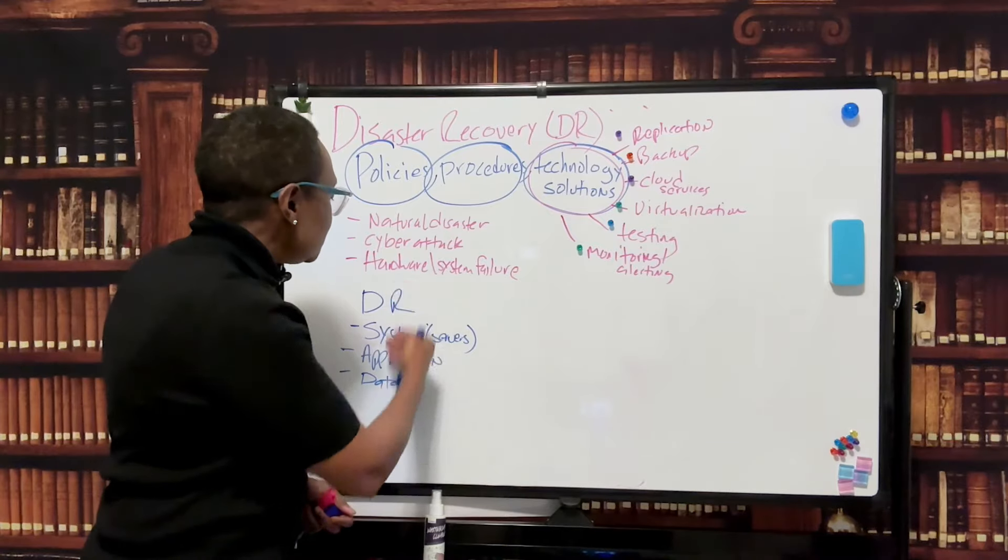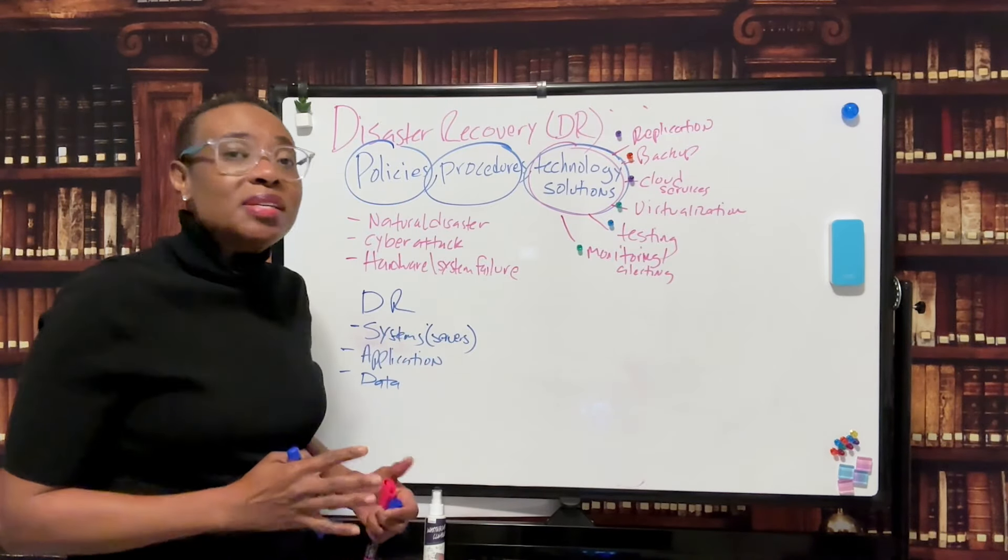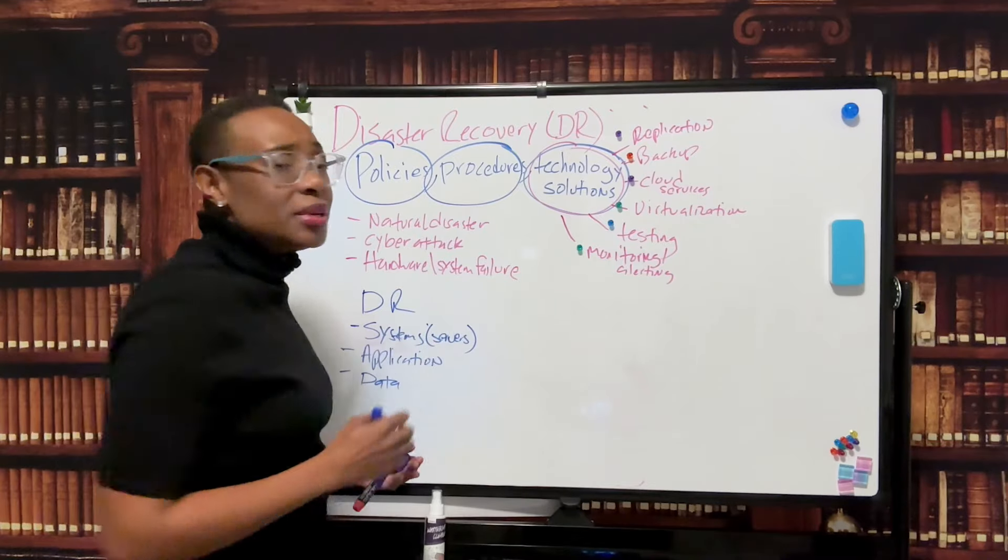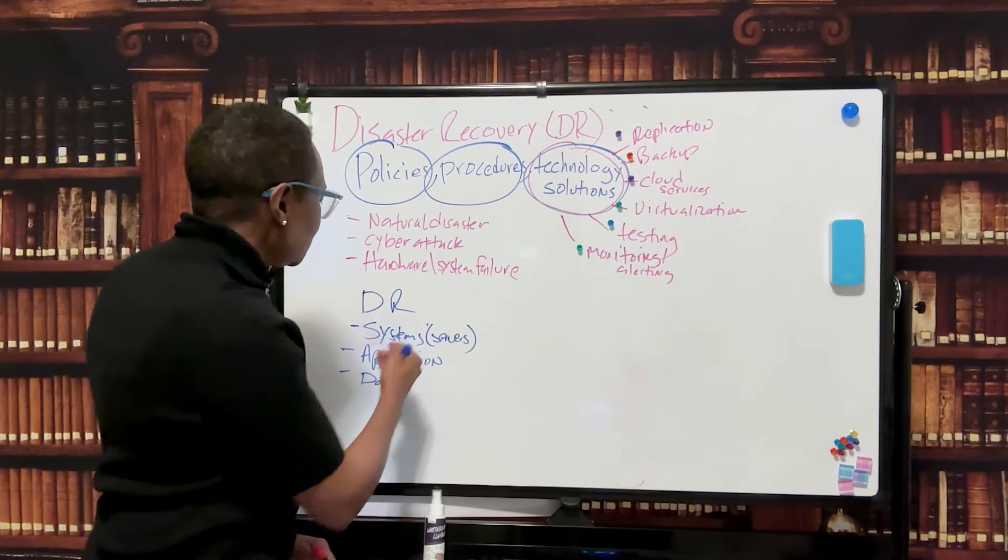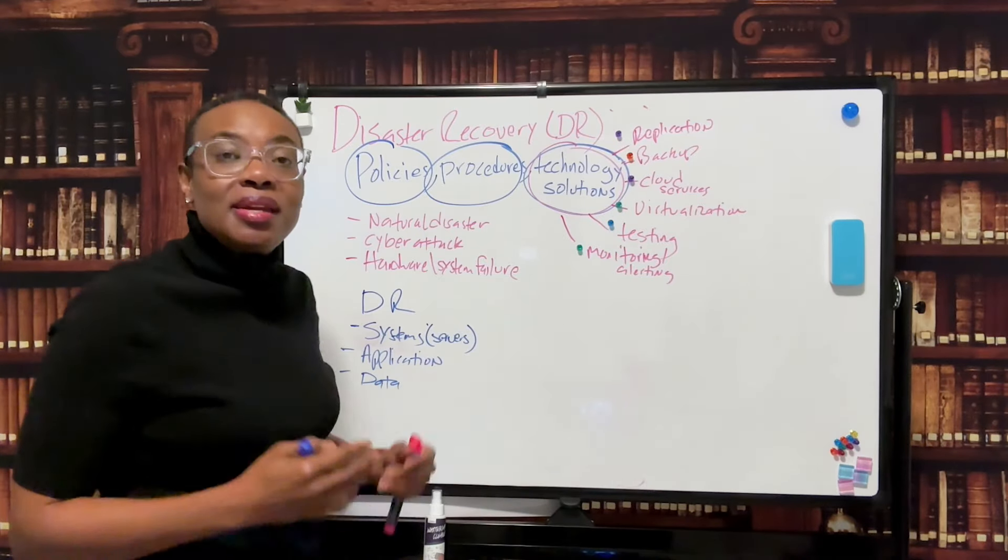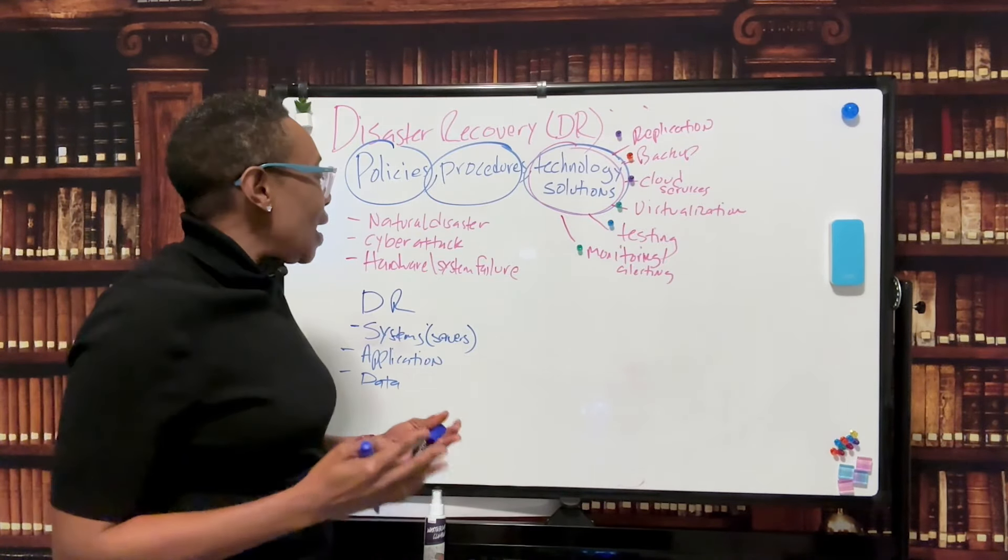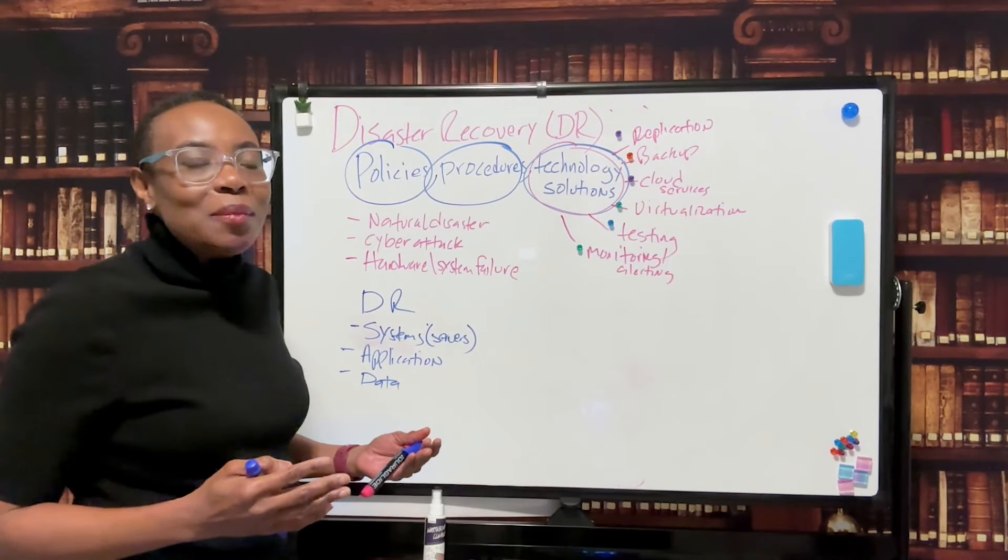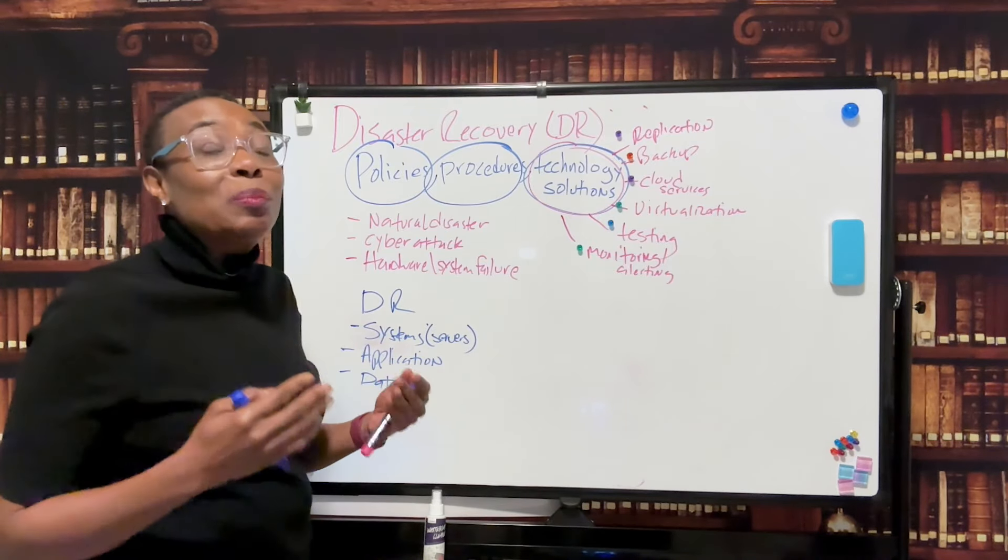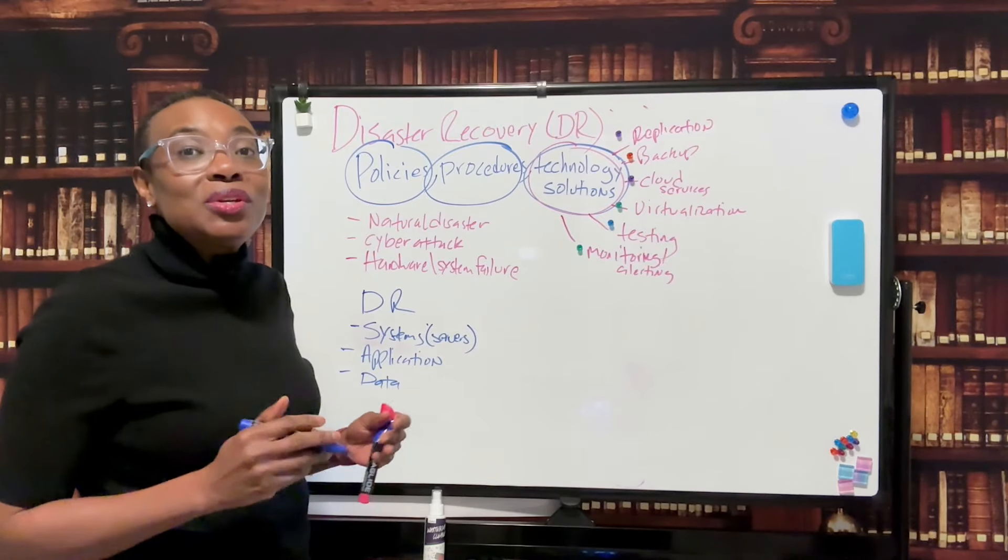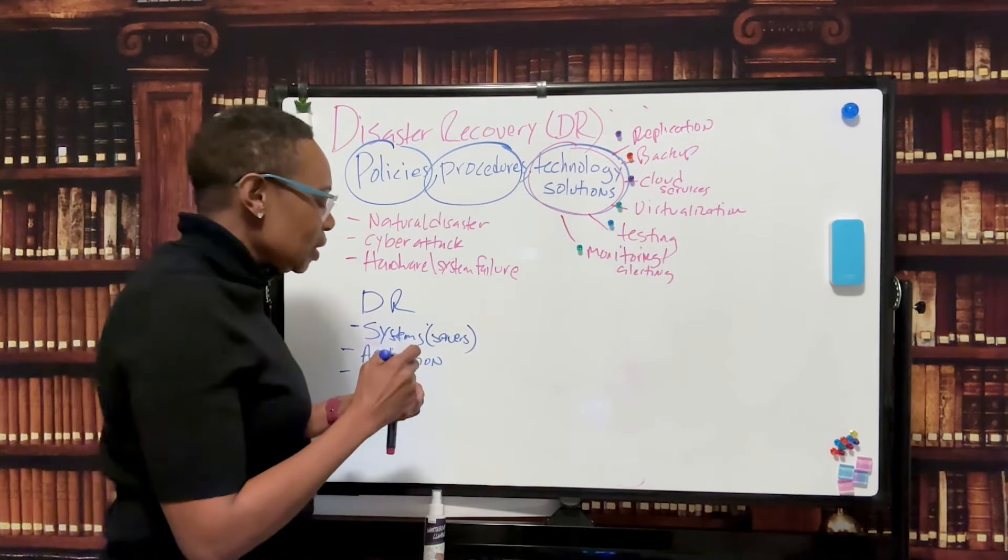And when you set up your DR site, it also needs these same elements. Because guess what, if you have a backup and you have a natural disaster and you don't have systems in place to restore that data to, you don't have the application that needs that data to provide that IT system, that is not a DR solution. Having a backup and no place to restore it is not going to reduce downtime.